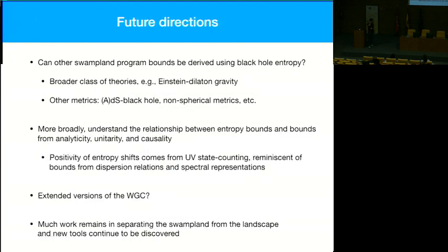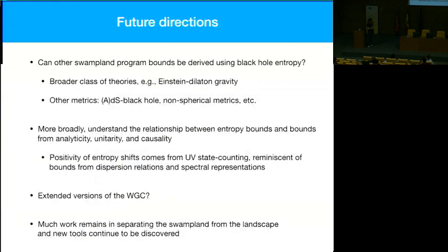There are many future directions. We could apply this to broader classes of theories like Einstein-dilaton gravity, or put the black hole in AdS or dS. We could consider Kerr black holes or non-spherical topology in higher dimensions. More broadly, it would be interesting to understand the relationship between these entropy bounds and bounds from analyticity, unitarity, and causality — both approaches are fundamentally about counting UV states, so there may be a deep connection. We conjecture that if one has hierarchically separated mass shells, a differential version of the entropy bound would hold, and delta S might serve as an A-theorem parameter capturing RG flow, growing monotonically from UV to IR.